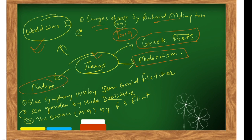Nature was another theme. Examples include 'Blue Symphony' by John Gould Fletcher in 1914, 'Sea Garden' by Hilda Doolittle, and a 1909 work by F.S. Flint. These works are related to the nature theme.